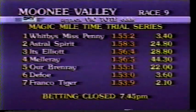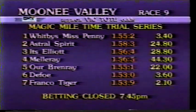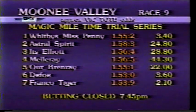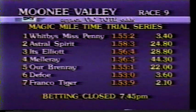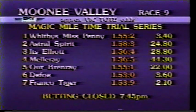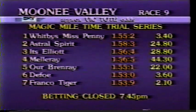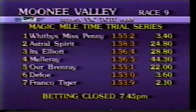1.53.9 recorded by Franco Tiger — nine tenths slower than Defoe in the previous event, but still an outstanding performance. Last horse in the Magic Mile time trial at Moonee Valley in 1.53.9. The winner of the Magic Mile time trial series: Defoe, in a new class and track record in 1.53. Second, Franco Tiger in 1.53.9. Third best is Al Brenray in 1.55.1.